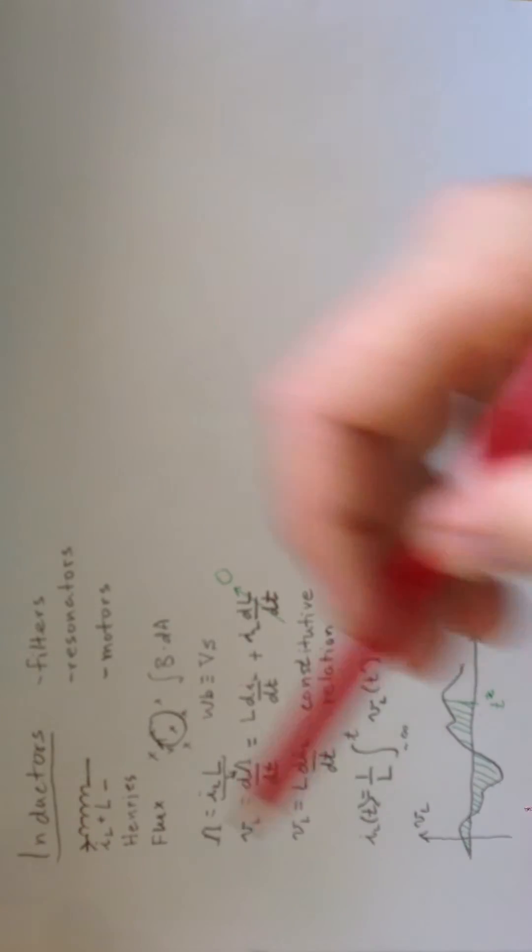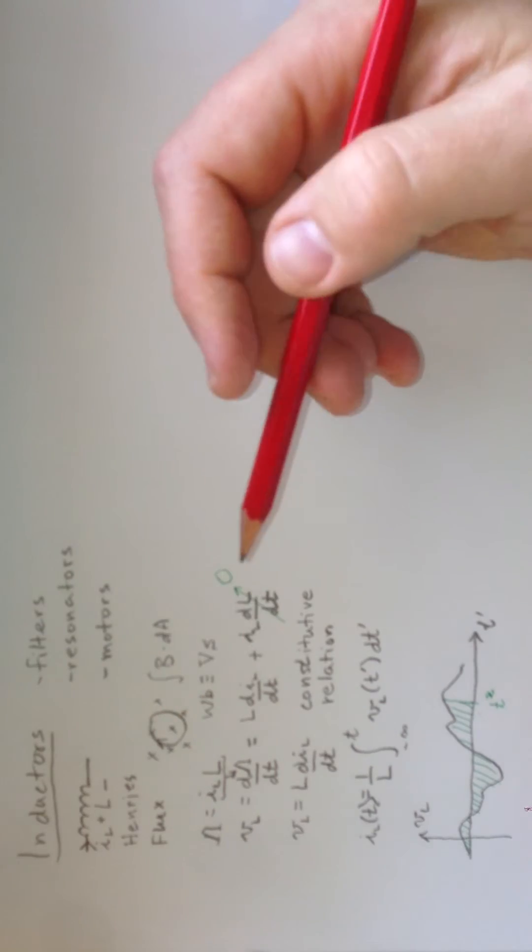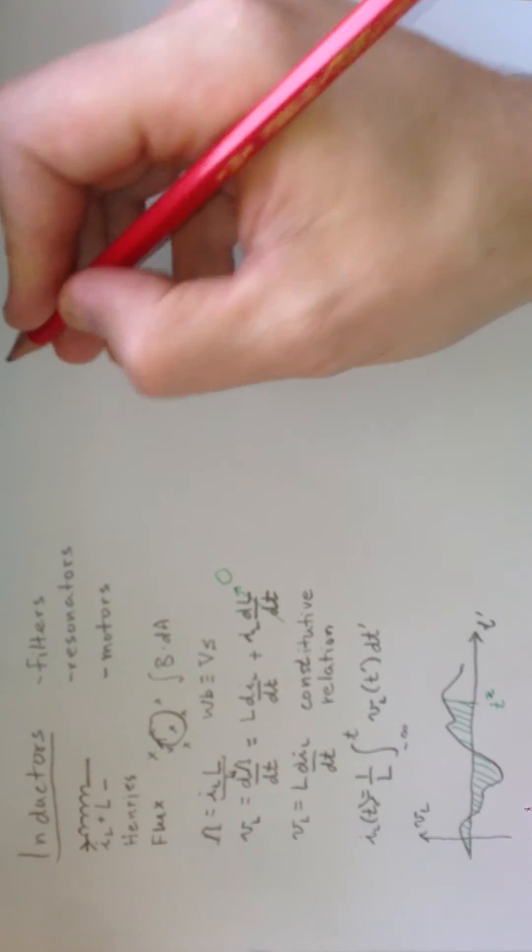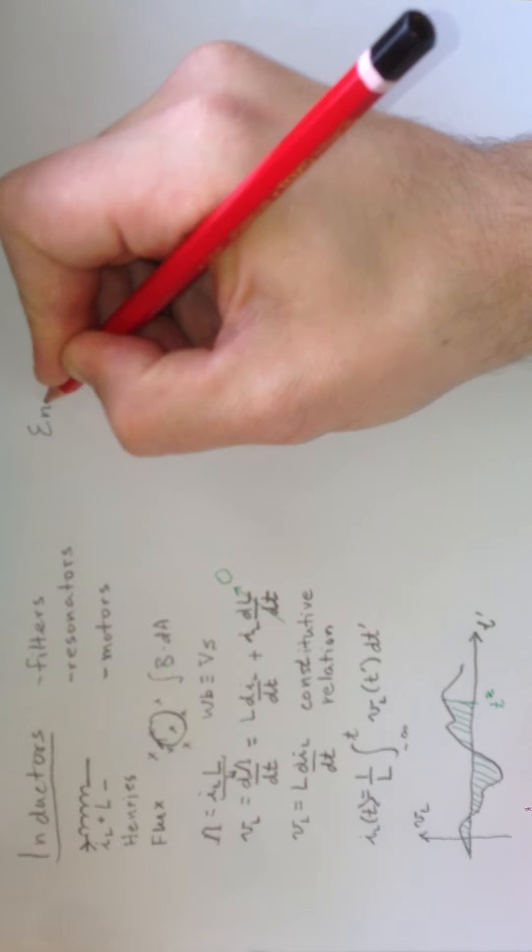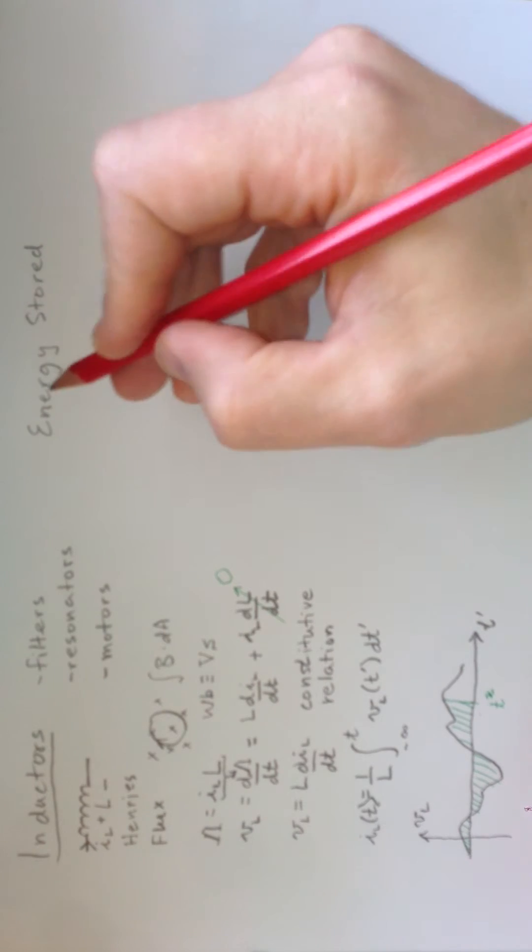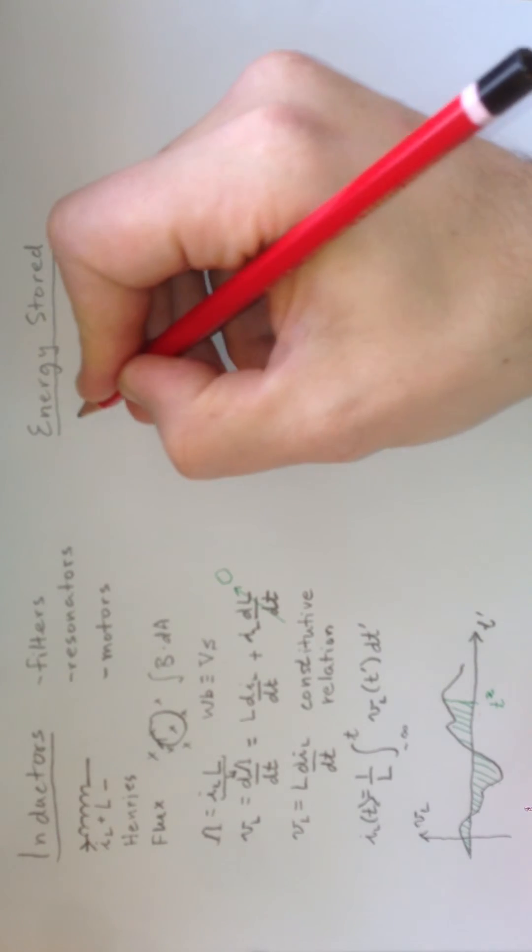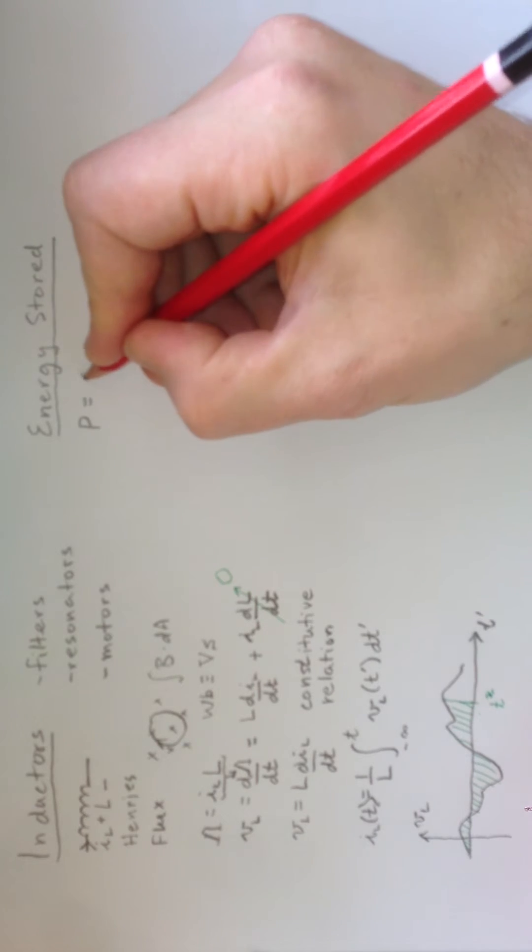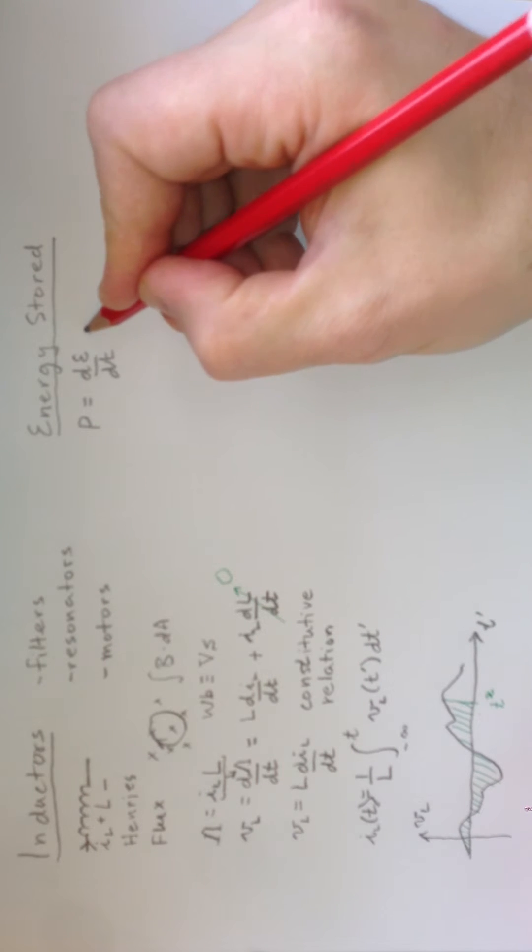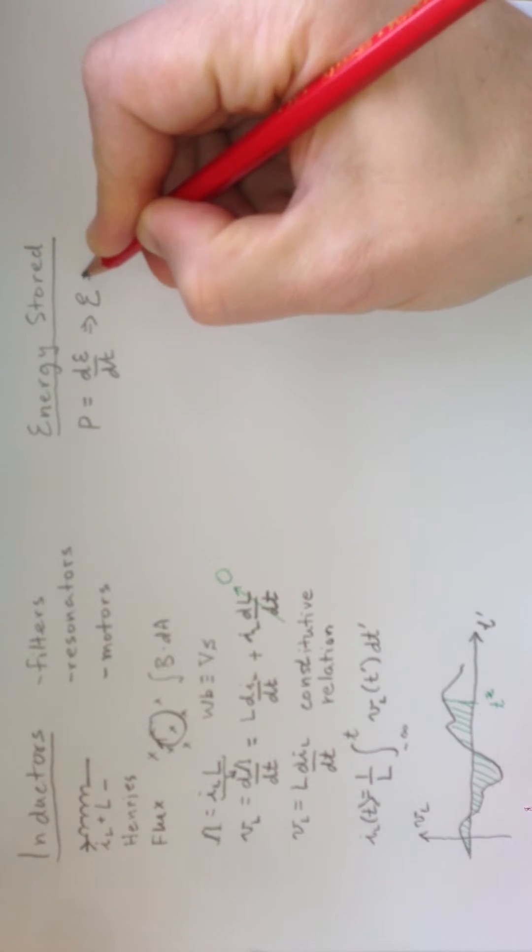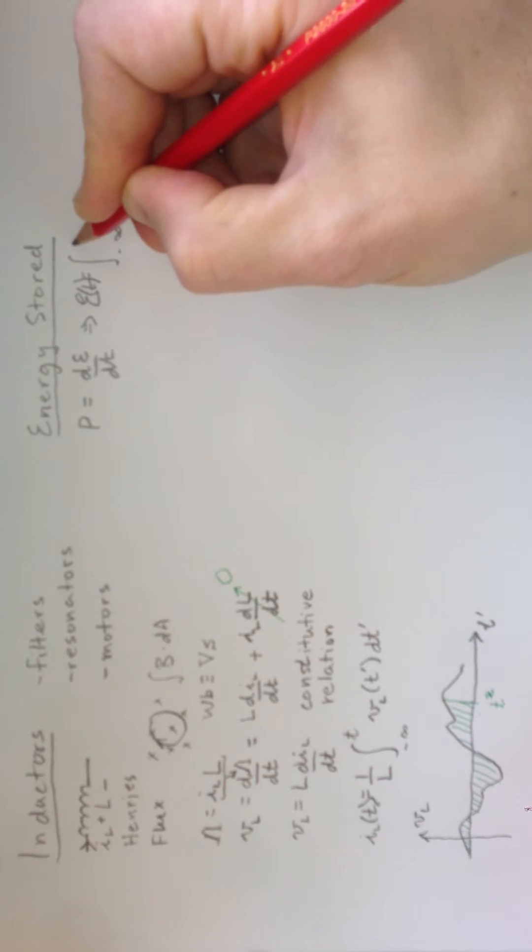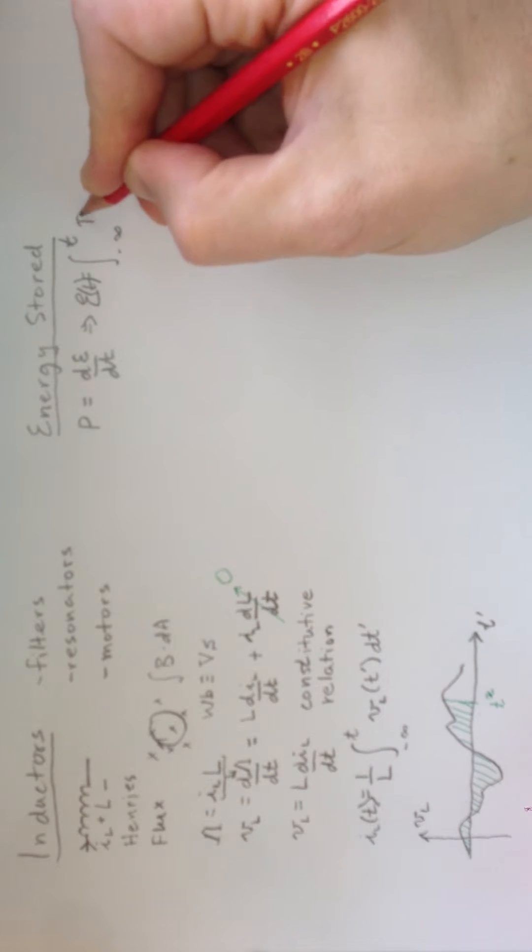So, this current represents stored flux in the inductor. And in order to store that flux, some work had to have been done, because there's energy stored in that magnetic field. So, if we calculate the energy stored in the magnetic field, the easiest way to do that is to recognize that the power is the rate of change of the energy.